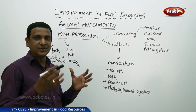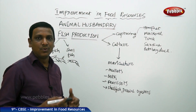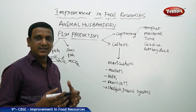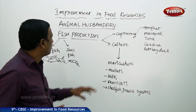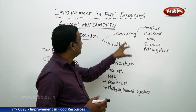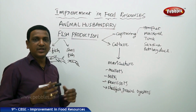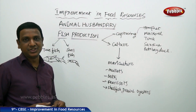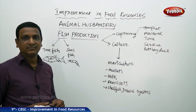Earlier, fish was obtained only by capturing. Later, as demand increased with more people looking for fish and capture becoming insufficient, people started culturing fish. So fish production is done by both capturing and culture. First, let us talk about marine fisheries — that is, sea fish.